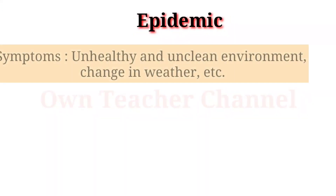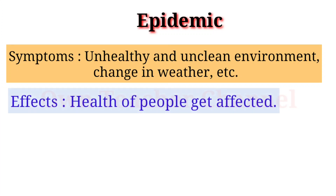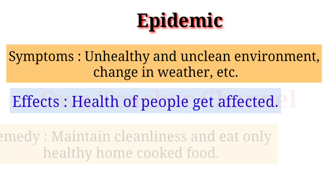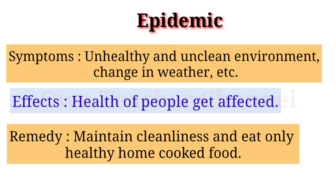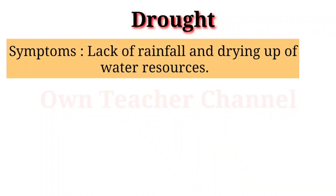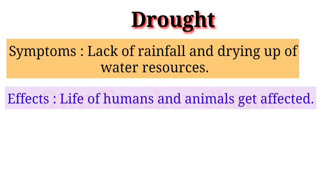Epidemic — Symptoms: unhealthy and unclean environment, change in weather, etc. Effects: health of people gets affected. Remedy: maintain cleanliness and eat healthy home-cooked food. Drought — Symptoms: lack of rainfall and drying up of water resources.